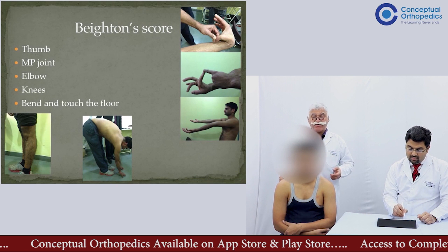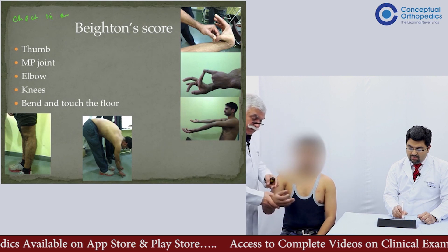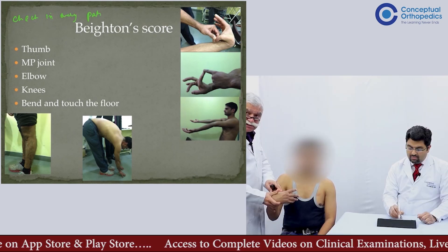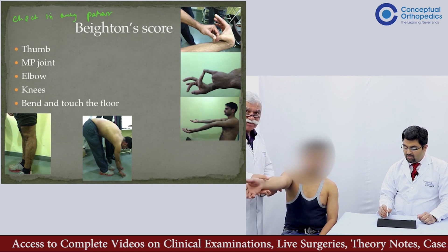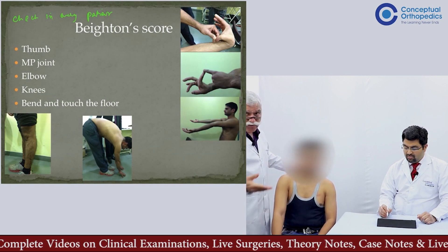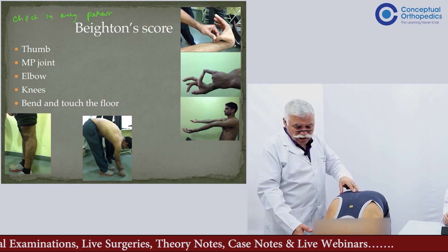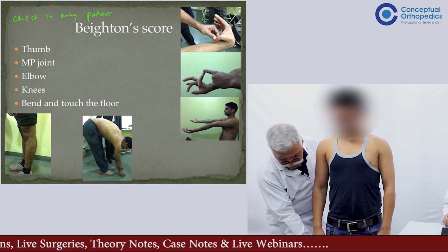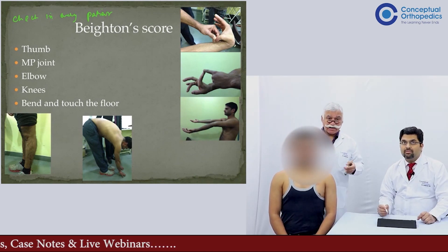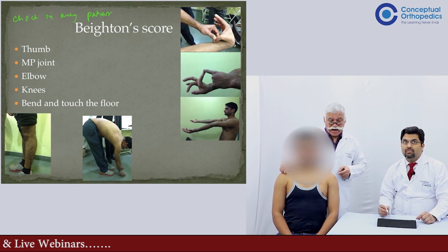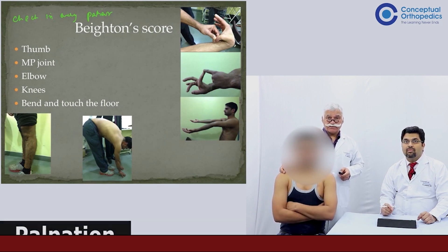Hypermobility is important to assess specifically in shoulder patients. One can look at how much the thumb can be taken backwards, look at the MCP joint, check for hyperextensibility of the elbow, assess forward flexion, and check for hyperextension of the knee. These points are important specifically in the shoulder, as the shoulder — being highly mobile — is affected more by hypermobility than other joints.